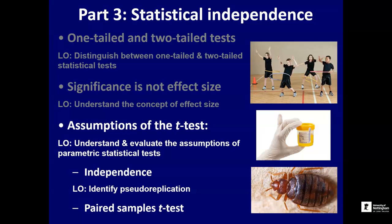Welcome back everybody to this the third part of lecture five in the experimental design and analysis series in core skills. In the final section of this lecture we're going to look at assumptions of parametric statistical tests, using the t-test as our exemplar statistical test. We're going to get to grips with the assumptions that test makes, and one really key assumption we're going to look at now is the assumption of independence — that the data are independent.